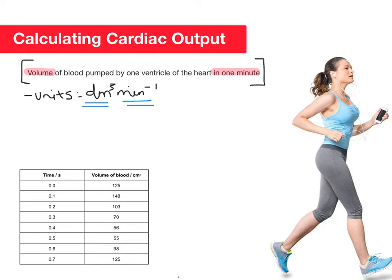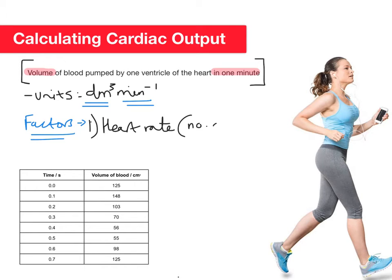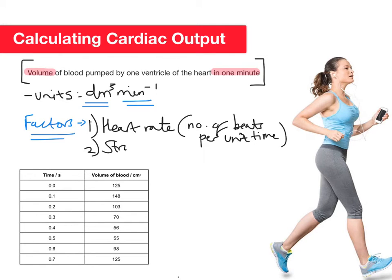There are two factors you need to know to calculate cardiac output. The first is heart rate. Heart rate is the number of beats of the heart per unit time — normally we talk about it as beats per minute, though depending on the question you might need to consider just the unit time given.